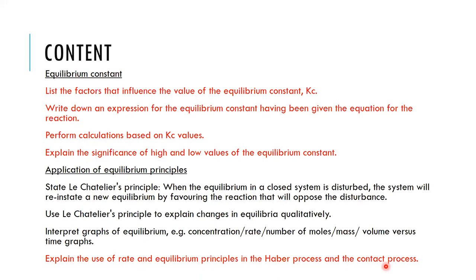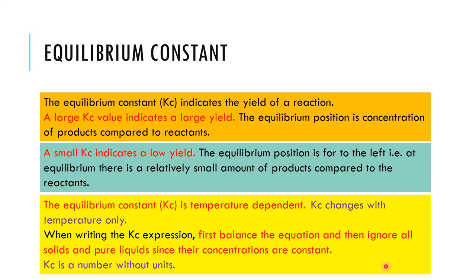The last topic for Grade 12 Chemistry Paper 2 is the fertilizer industry, and these two processes — Haber and contact — are in the fertilizer industry. Before we move into the equilibrium constant formula, let me explain what the Kc value means. Kc has no units because it is the ratio between the concentration of products divided by the concentration of reactants. If Kc equals 1, the concentrations of reactants and products are almost equal.